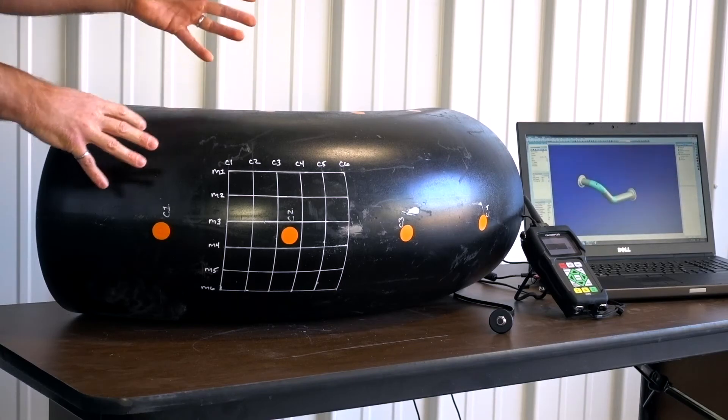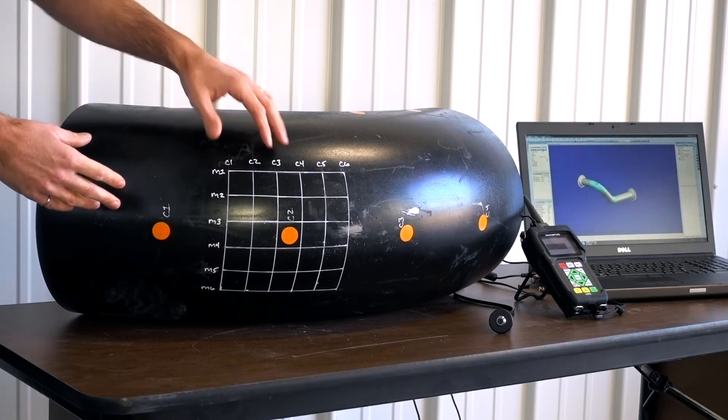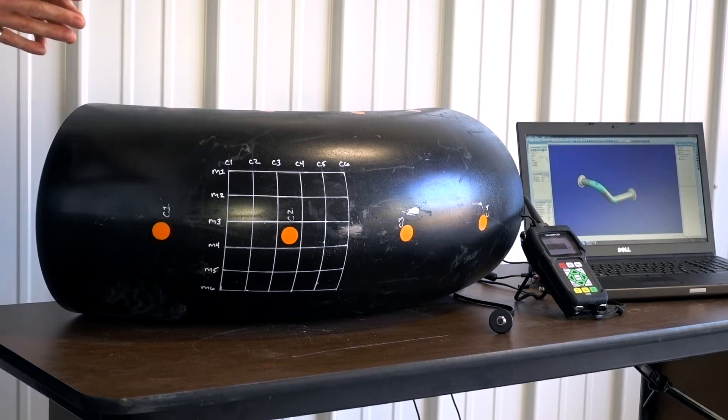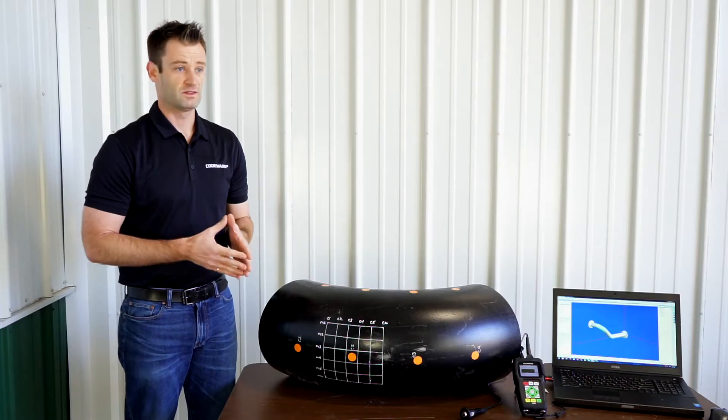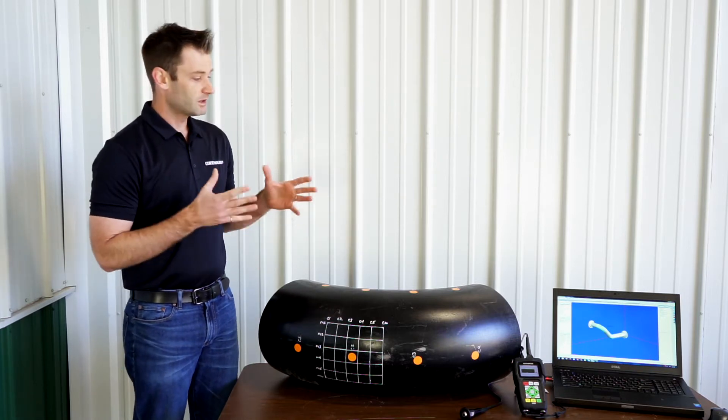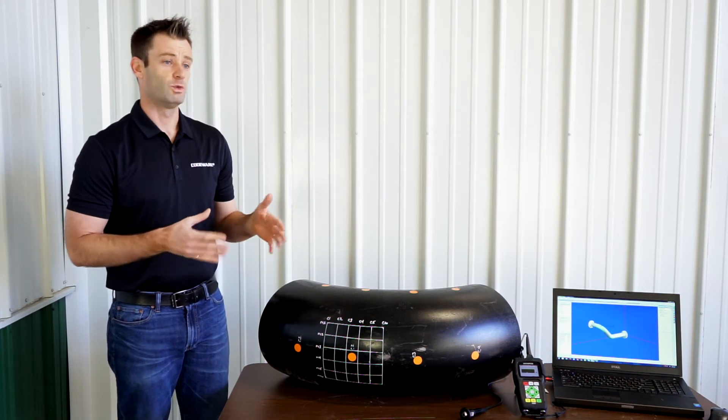So what is going to happen is let's say we've got this elbow here, one of the inspections came back and the point right here C2 is below T-min. So we're not sure what caused it, what the damage mechanism was, it could be high pressure turbulent flow, it could be erosion corrosion, we're not sure. But we're going to do a part five fitness for service assessment on this and we're going to be looking at levels one and two.